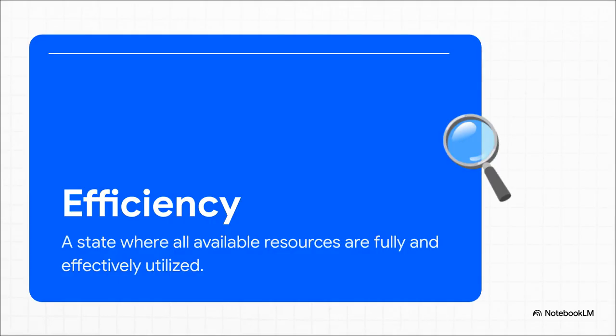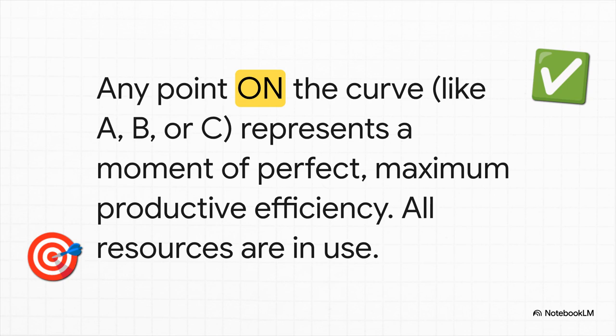Okay, so what does it actually mean for an economy to be operating right on this curve? Well, it means that economy has hit a state of perfect efficiency. Any point you see sitting right on this curve, whether it's point A, B, or C, it represents a moment of maximum productive efficiency.